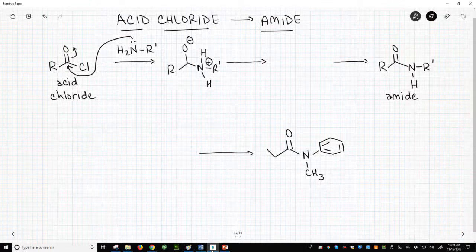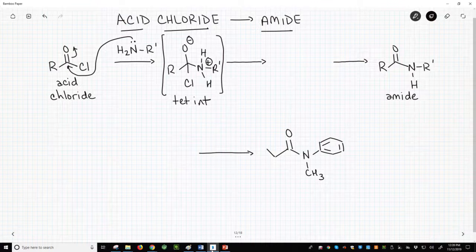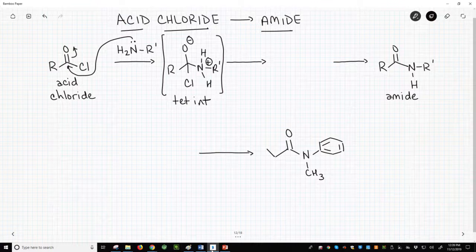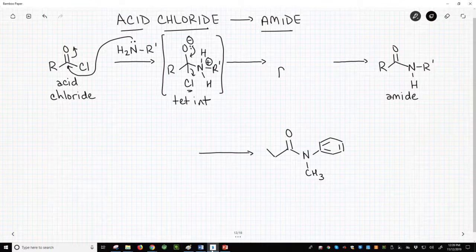There's an N plus and our chlorine. At the tetrahedral intermediate stage, we look for a leaving group and quickly notice the chlorine. Use the O minus to eject a chloride ion that reforms the carbonyl.